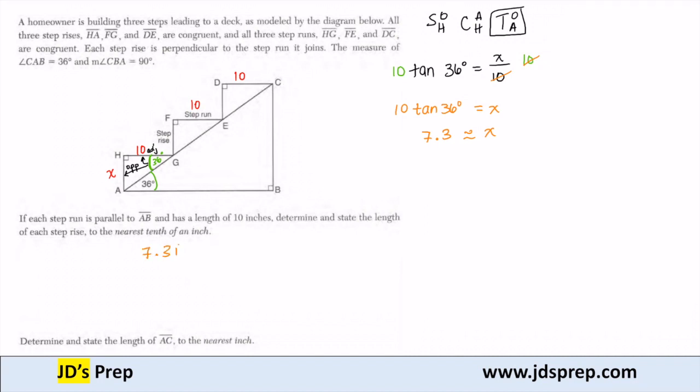So 7.3 inches. Now we want to determine and state the length of AC to the nearest inch. And AC is the hypotenuse of triangle ABC. In order to figure that out, now I need to know each one of these measures here.